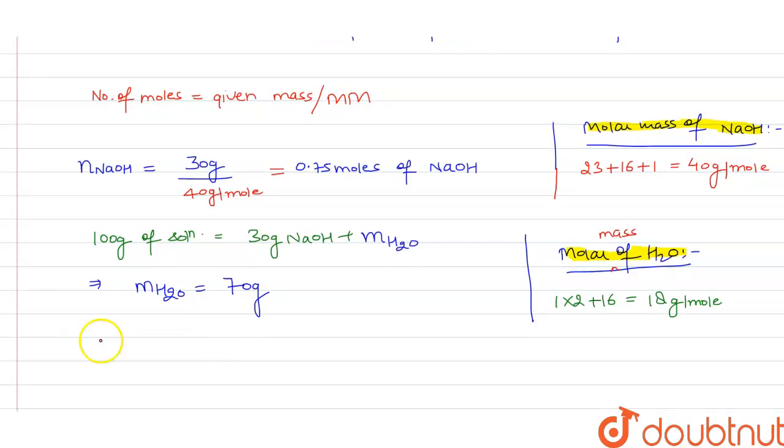Now we find the number of moles of water. It will be 70 gram divided by 18 gram per mole. On solving, we get 3.88 mole of water.